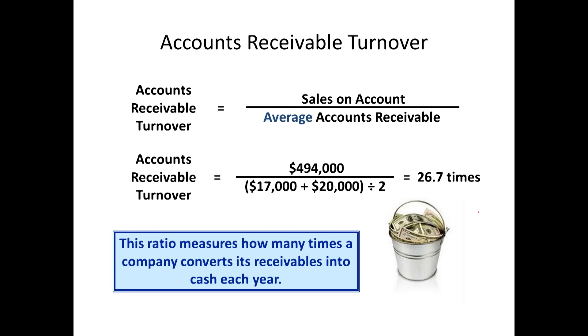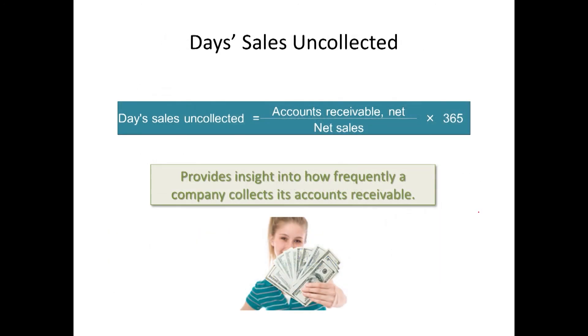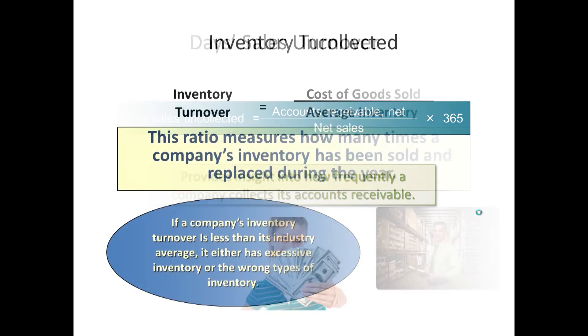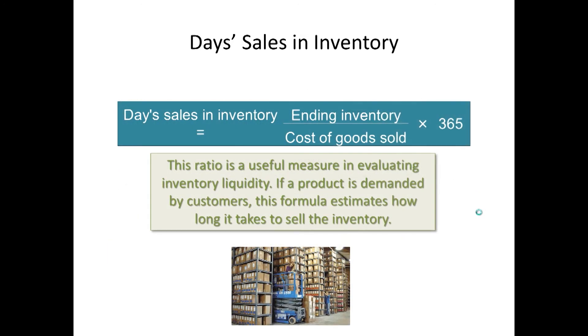We want it to turn over like this. These next ratios measure those factors: accounts receivable turnover — how many days uncollected in sales do we have, how long is it taking our receivables to come in, are our receivables slowing down? Inventory turnover — how many times does our inventory turn over in a year? What is our days' sales in inventory — if we stopped purchasing inventory, how many days' worth would we have to sell before we ran out?